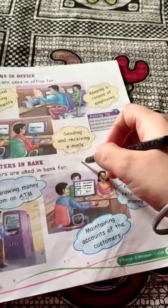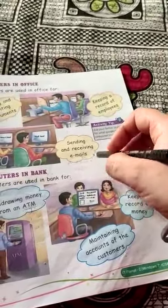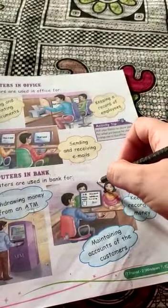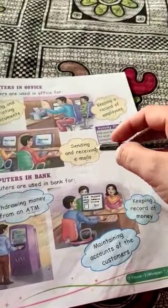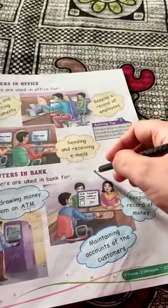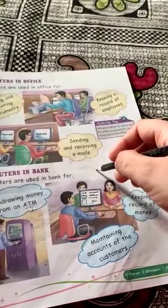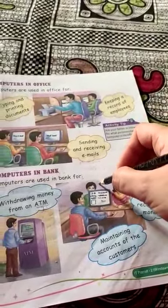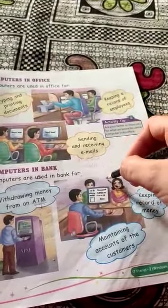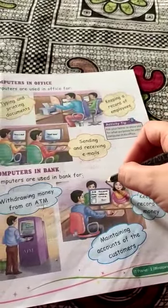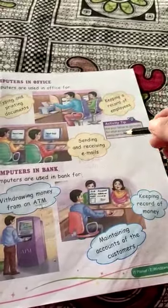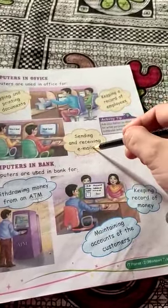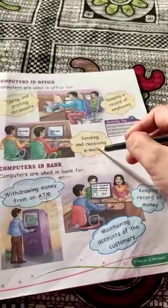Email means electronic mail. For example, if you write a letter on paper, you send it only by post. But if you write a letter on a computer and want to send it from one computer to another, that is called email — electronic mail.